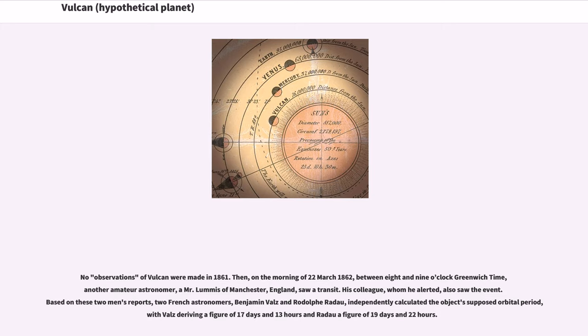Based on these two men's reports, two French astronomers, Benjamin Valz and Rodolphe Radau, independently calculated the object's supposed orbital period, with Valz deriving a figure of 17 days and 13 hours and Radau a figure of 19 days and 22 hours.